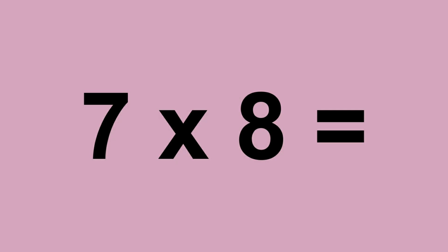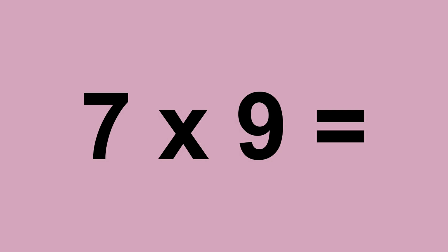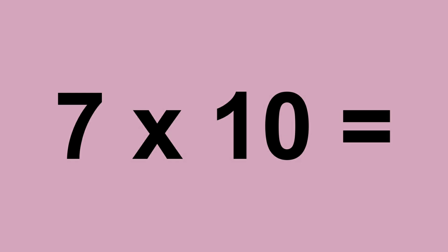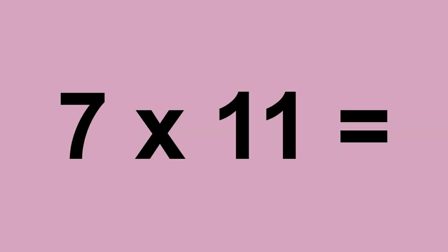7 times 7 equals 49. 7 times 8 equals 56. 7 times 9 equals 63. 7 times 10 equals 70. 7 times 11 equals 77.